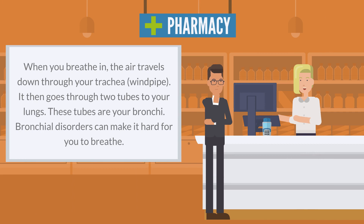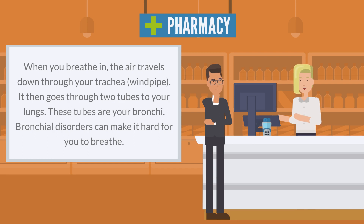When you breathe in, the air travels down through your trachea windpipe. It then goes through two tubes to your lungs. These tubes are your bronchi.